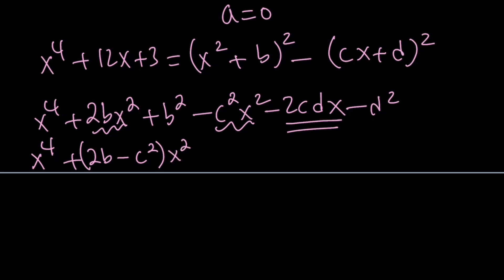That's the only x term, negative 2c dx. And then finally we have these two constants b squared minus d squared. Underlining is actually a very good idea if you're working with polynomials, adding, subtracting, and multiplying. Especially when combining like terms, this is very helpful.